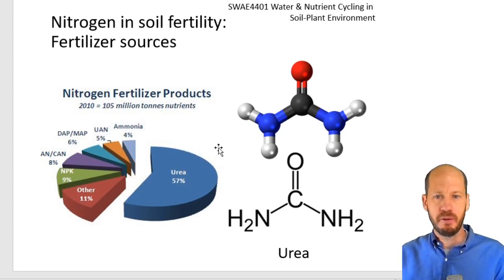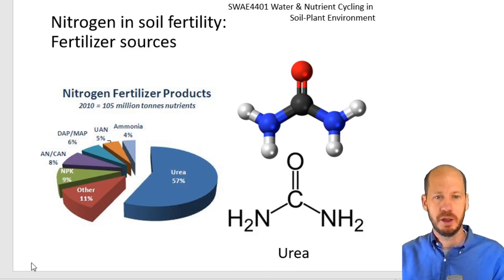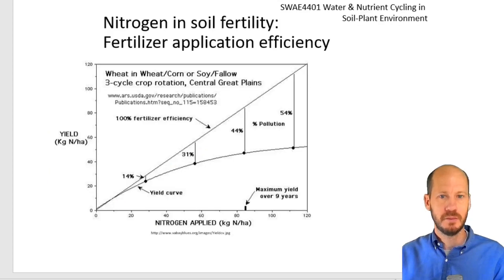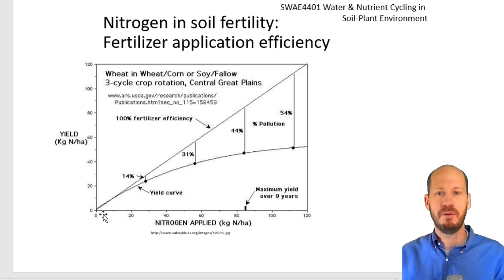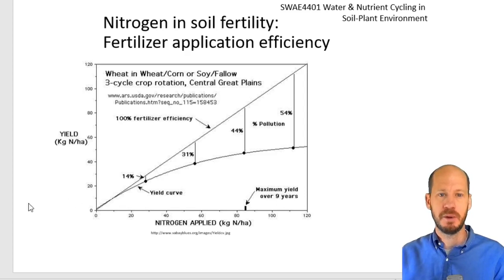This is the molecule of urea — one carbon molecule with two amino groups. The same type of concept of critical phosphorus and fertilizer application efficiency can also be applied for nitrogen.